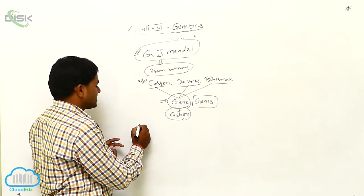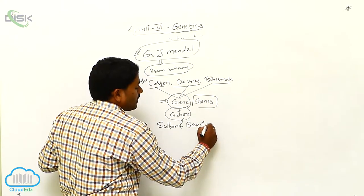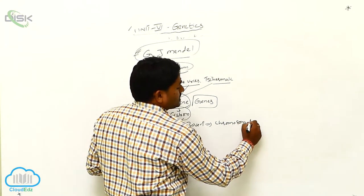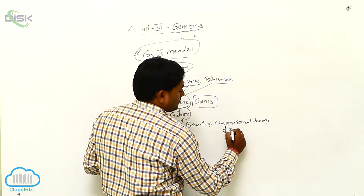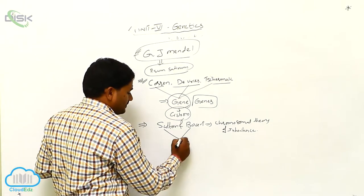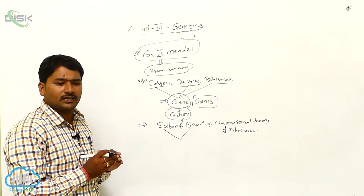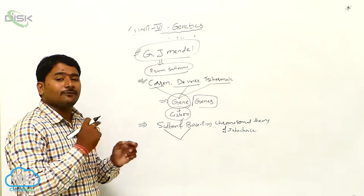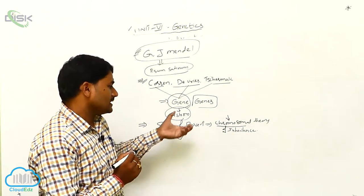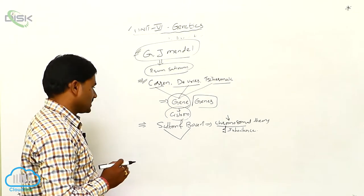After Correns, DeVries, and Chermak, the scientists Sutton and Bovery proposed the chromosomal theory of inheritance. As per these two scientists, chromosomes are responsible for the transmission of characters — they transmit characters from parents to offspring, and the factors responsible for transmission are located on chromosomes. This was the chromosomal theory of inheritance proposed by Sutton and Bovery.